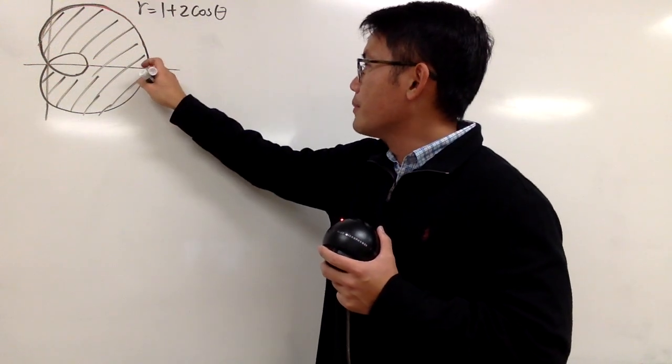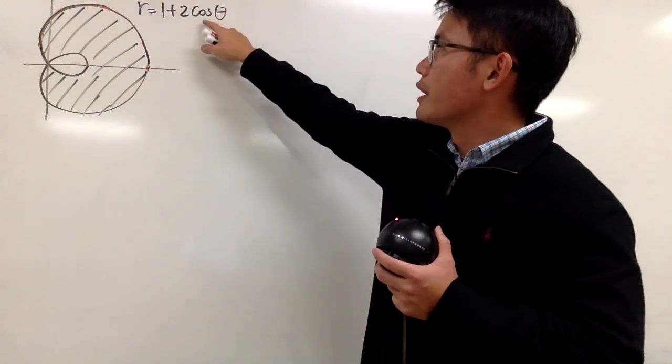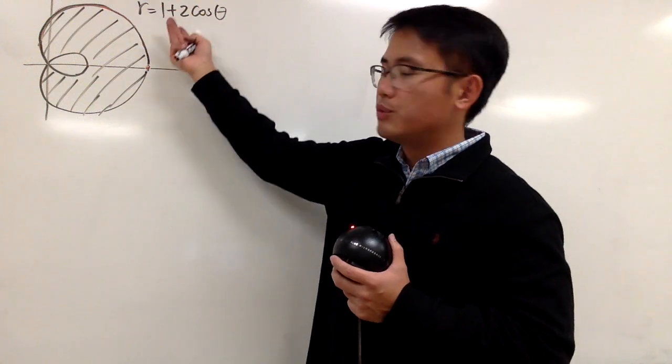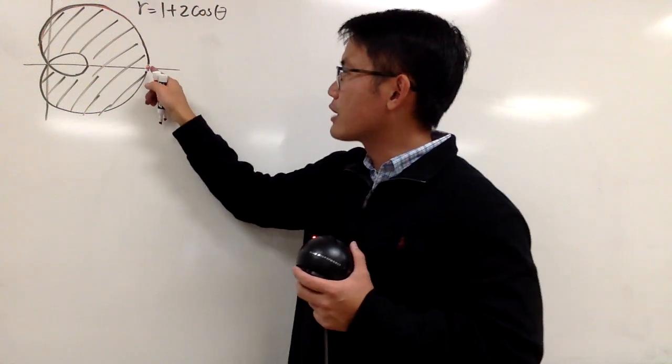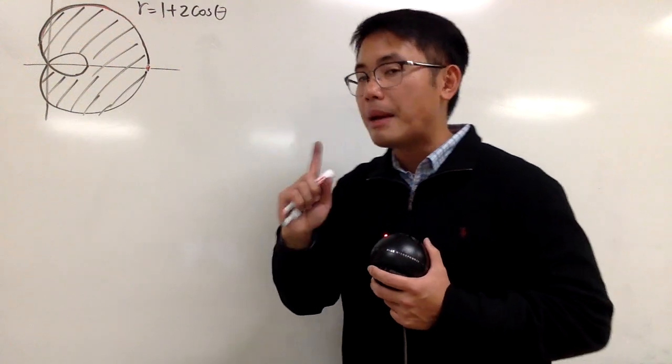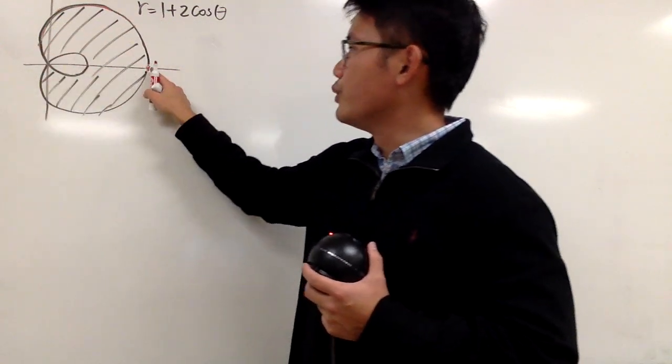Right here, when theta is equal to 0, it's at this point. Why? Because if you plug in 0, you get cosine 0 which is 1, times that by 2 which is 2, and then plus 1 is 3. And you'll see that this is actually (0, 3). 0 for theta, r is 3. That means you are looking at this direction and you are going out 3 units away.